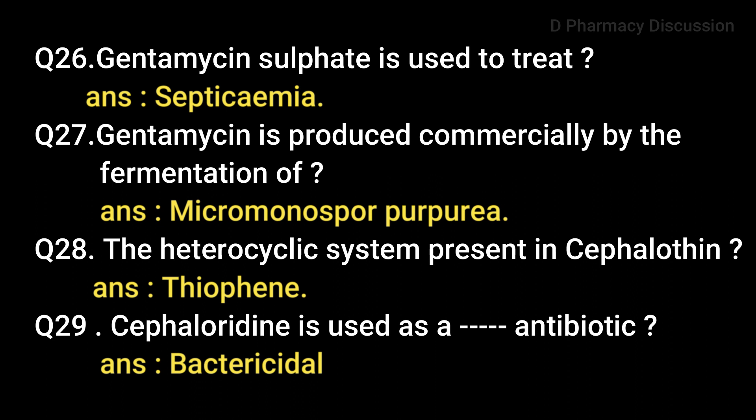Question 26: Gentamicin sulfate is used to treat septicemia including neonatal sepsis and other severe systemic infections due to gram-negative organisms. Question 27: Gentamicin is produced commercially by the fermentation of Micromonospora purpurea. Gentamicin is also an aminoglycoside antibiotic complex.